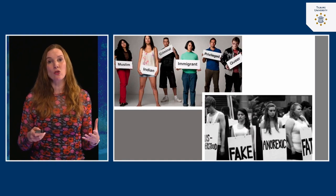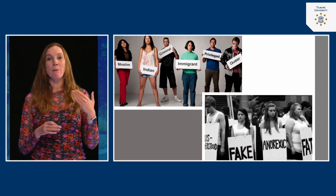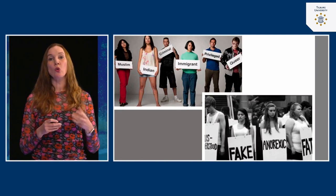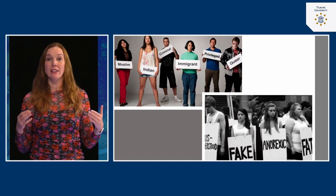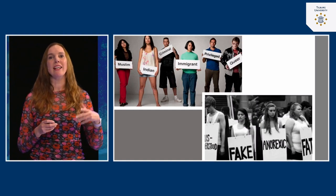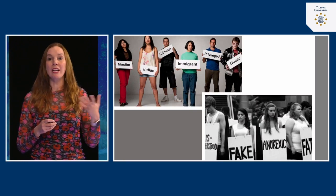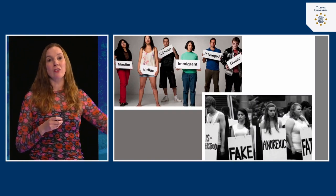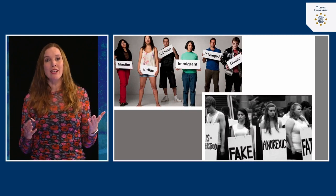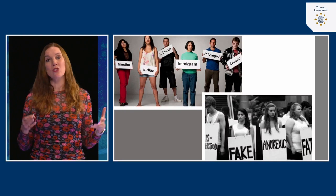Stereotypes are also very problematic because they tend to stick. In lecture three we talked about the many ways in which we try to reaffirm our pre-existing beliefs — this is called confirmation bias. If we have a certain idea about a group of people, we look for information that proves we are correct. For example, if we think people from a certain outgroup are lazy, we look for evidence confirming that and ignore evidence showing otherwise. These beliefs linger even if we are corrected.